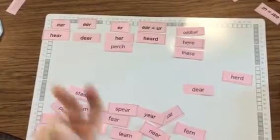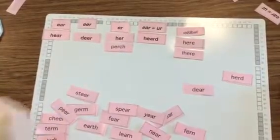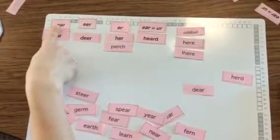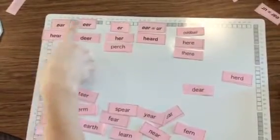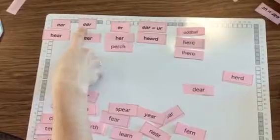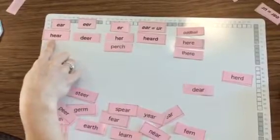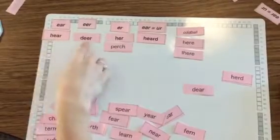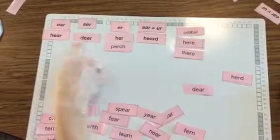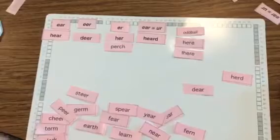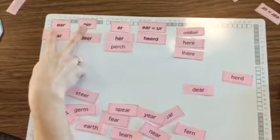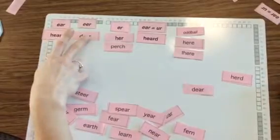So the ear sound is spelled either E-A-R or E-E-R, just like the word hear and dear. We hear the ear sound and it's spelled two different ways.